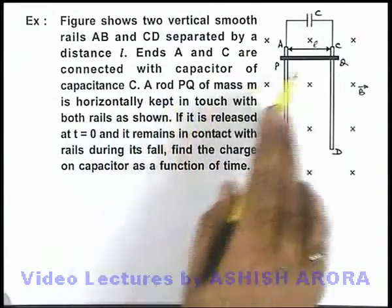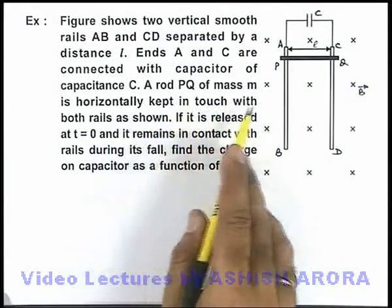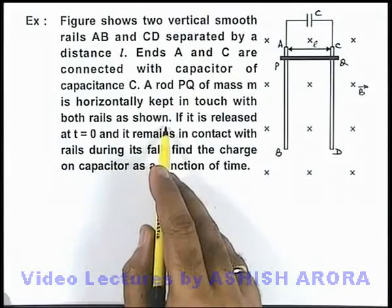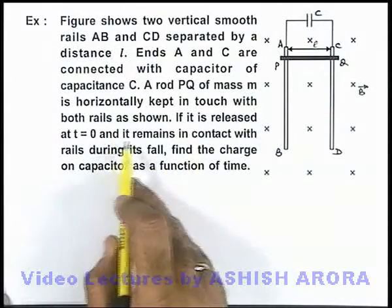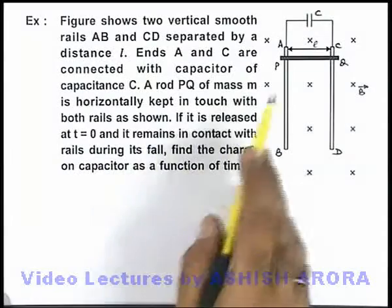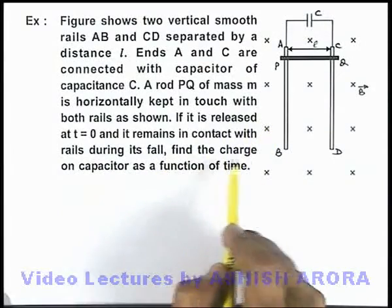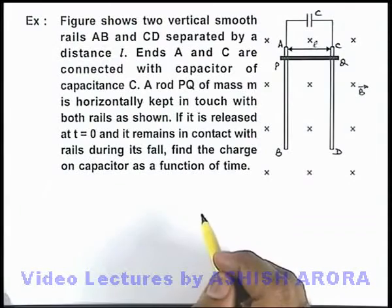A rod PQ of mass m is horizontally kept in touch with both the rails as shown. If it is released at t equals zero and it remains in contact with rails during the fall, we are required to find the charge on capacitor as a function of time.